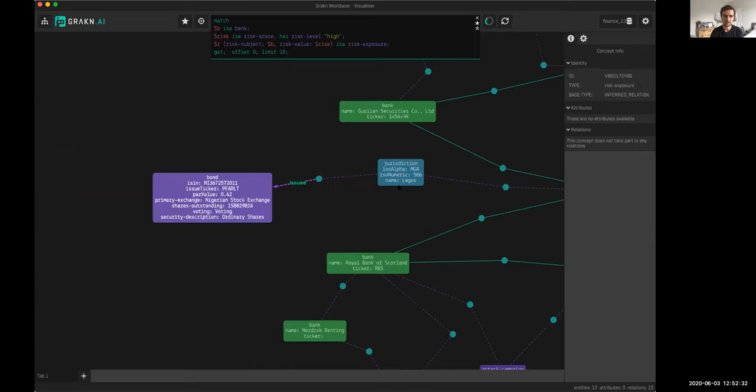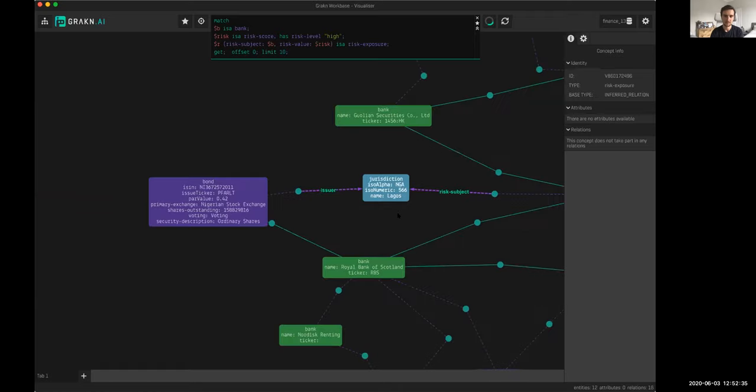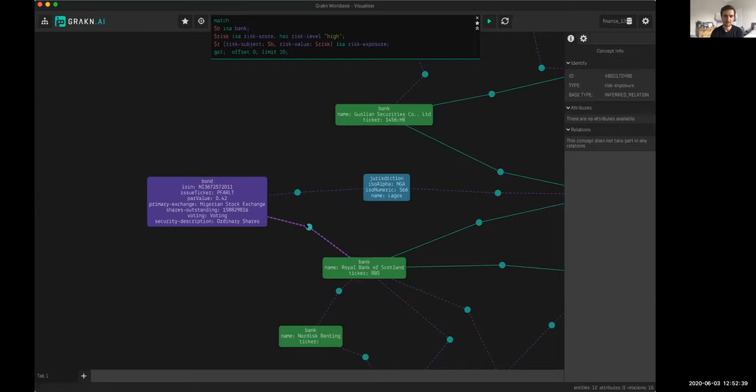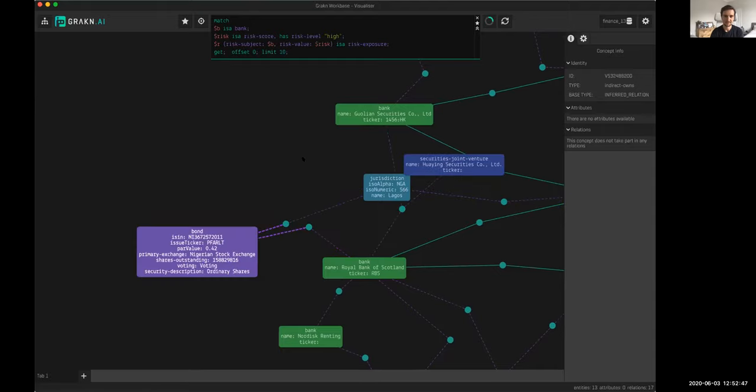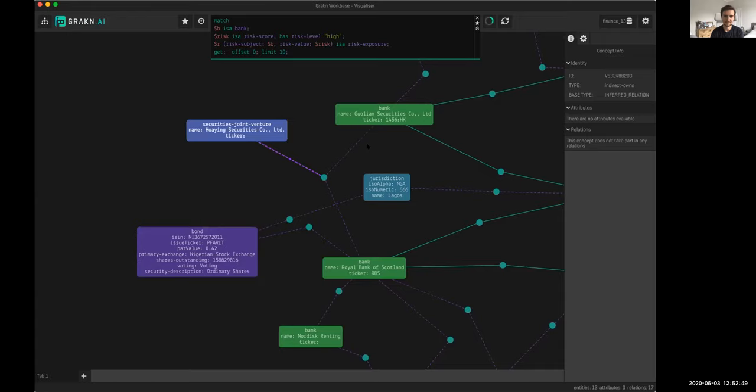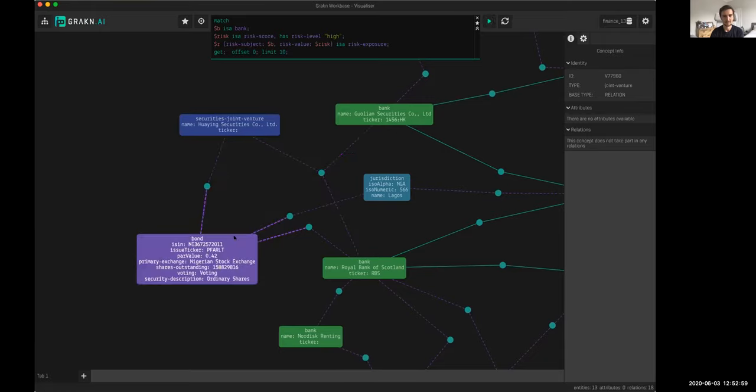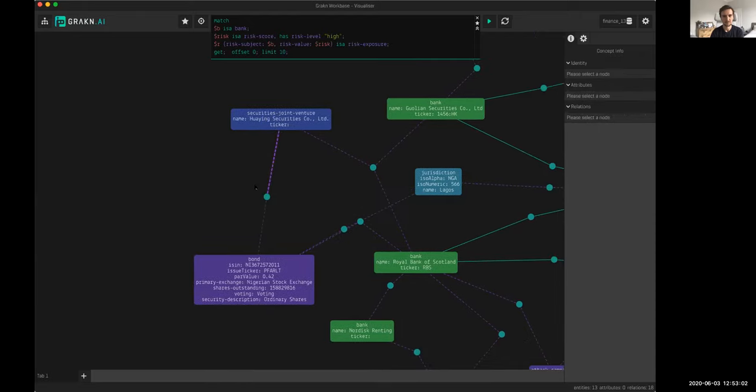The more fundamentally interesting part of this particular example is that when we look at this particular bond, its relation to RBS isn't direct. They don't own it directly. If I press explain on this relation, I see that there's a joint venture between Guolean and RBS. Bear in mind, this is what we call a ternary relation—a three-way relation. There's an example of a hyper relation.